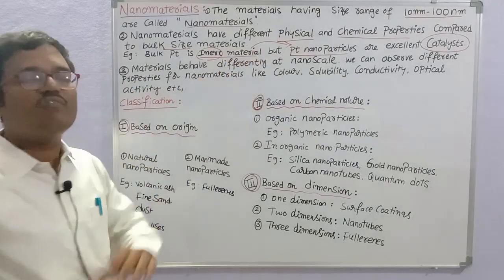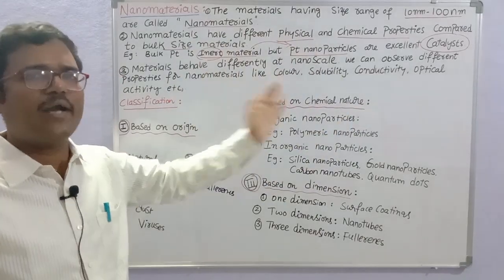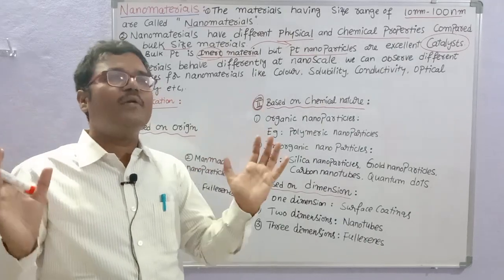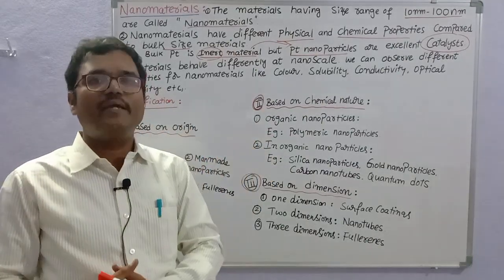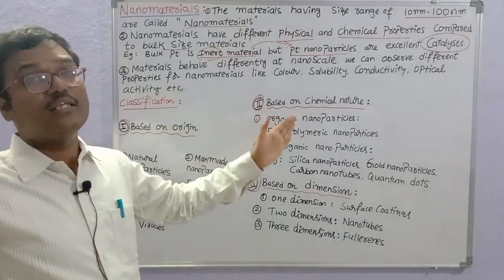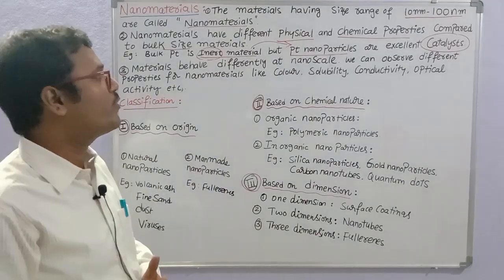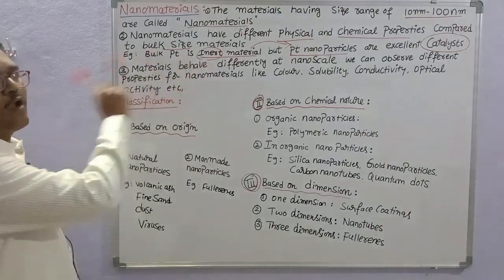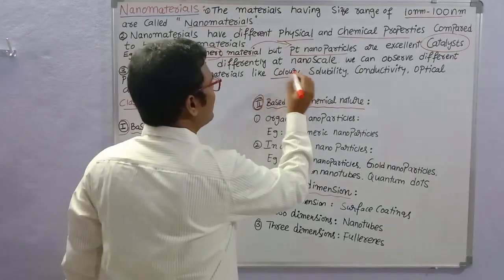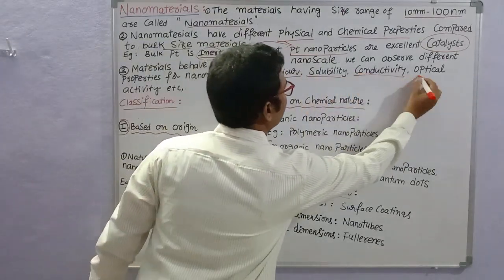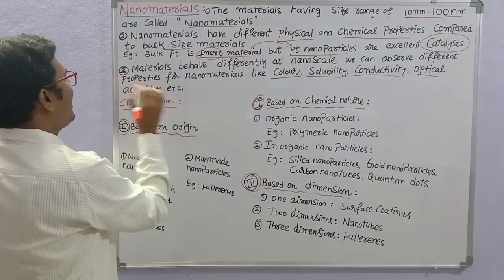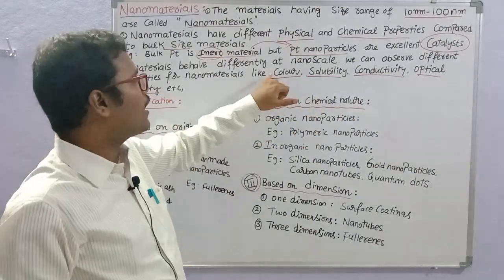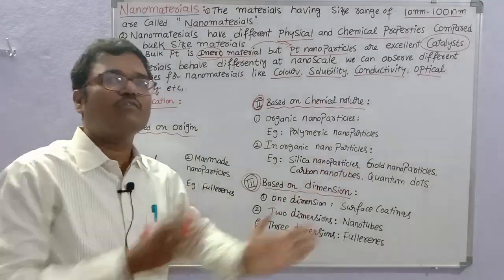Materials behave differently at nanoscale. The same material exists in bulk size — centimeter, millimeter, micrometer size — and also at nanoscale range. We can observe different properties for nanomaterials like color, solubility, conductivity, and optical activity. For example, bulk size material has one color, and nanosize material has a different color.